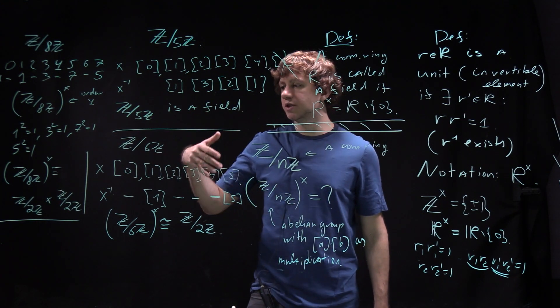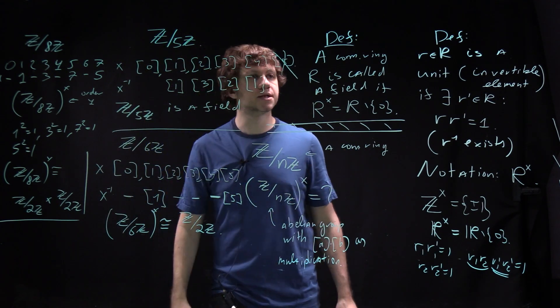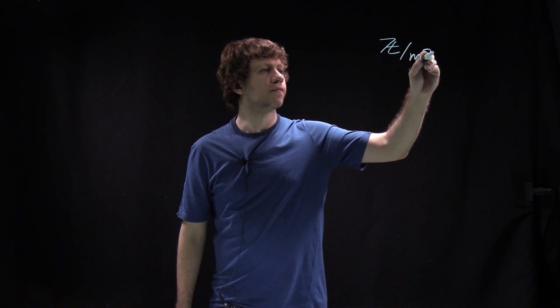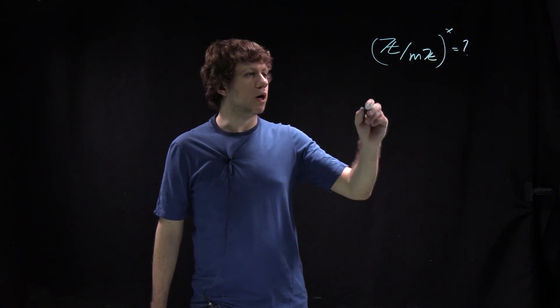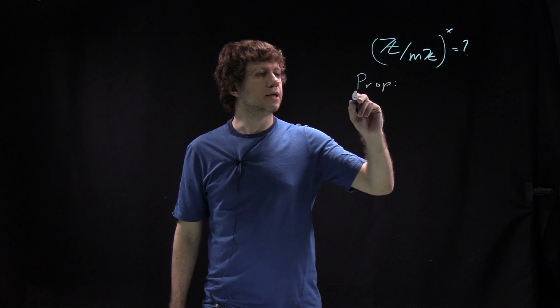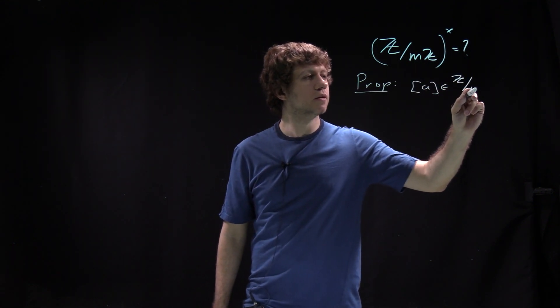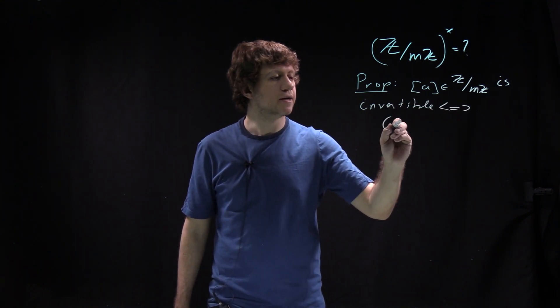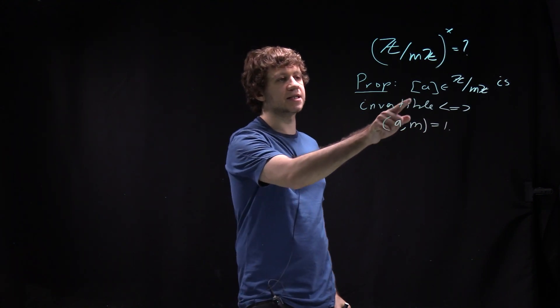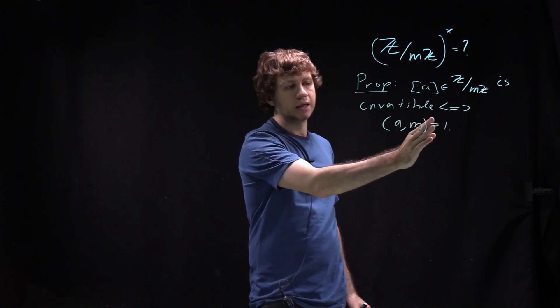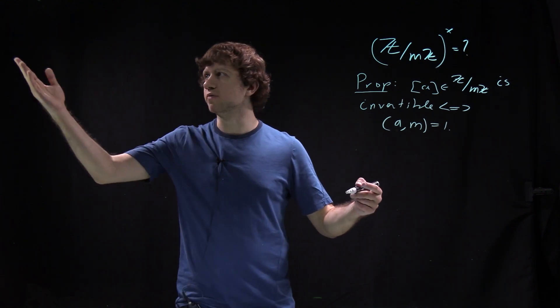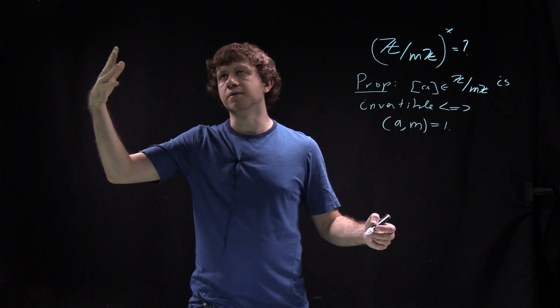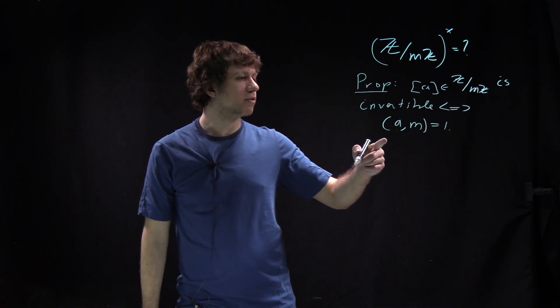Next I want to understand the number of elements there, the order of this group. Let's take Z over mZ times. The claim, the proposition, is that the class a inside Z over mZ is invertible if and only if a is co-prime to m. Notice this doesn't depend on the representative; if you add or subtract m to a, it will still be co-prime. This is exactly what we saw before. For instance, for the 8 case, it was 1, 3, 5, 7, exactly the number of co-prime numbers less than m.